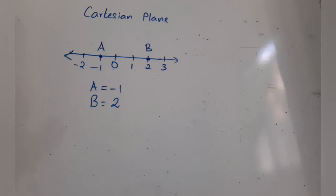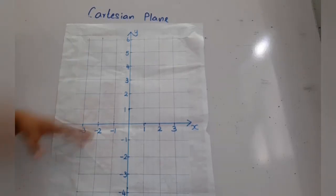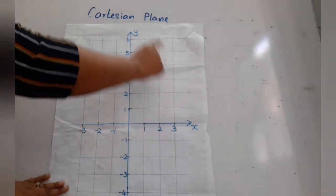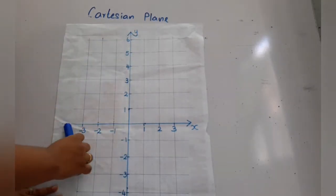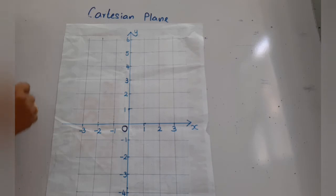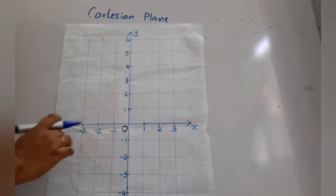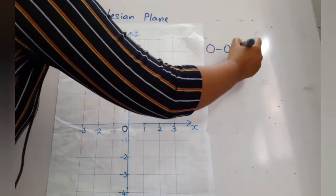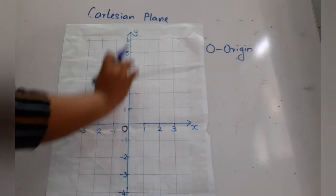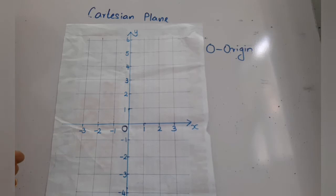A Cartesian plane is actually two number lines lying horizontally and vertically together. As you can see, one lies horizontally and the other lies vertically. The intersecting point of these two is known as O — the origin of the Cartesian plane. Both zeros of the number lines lie at this origin point.